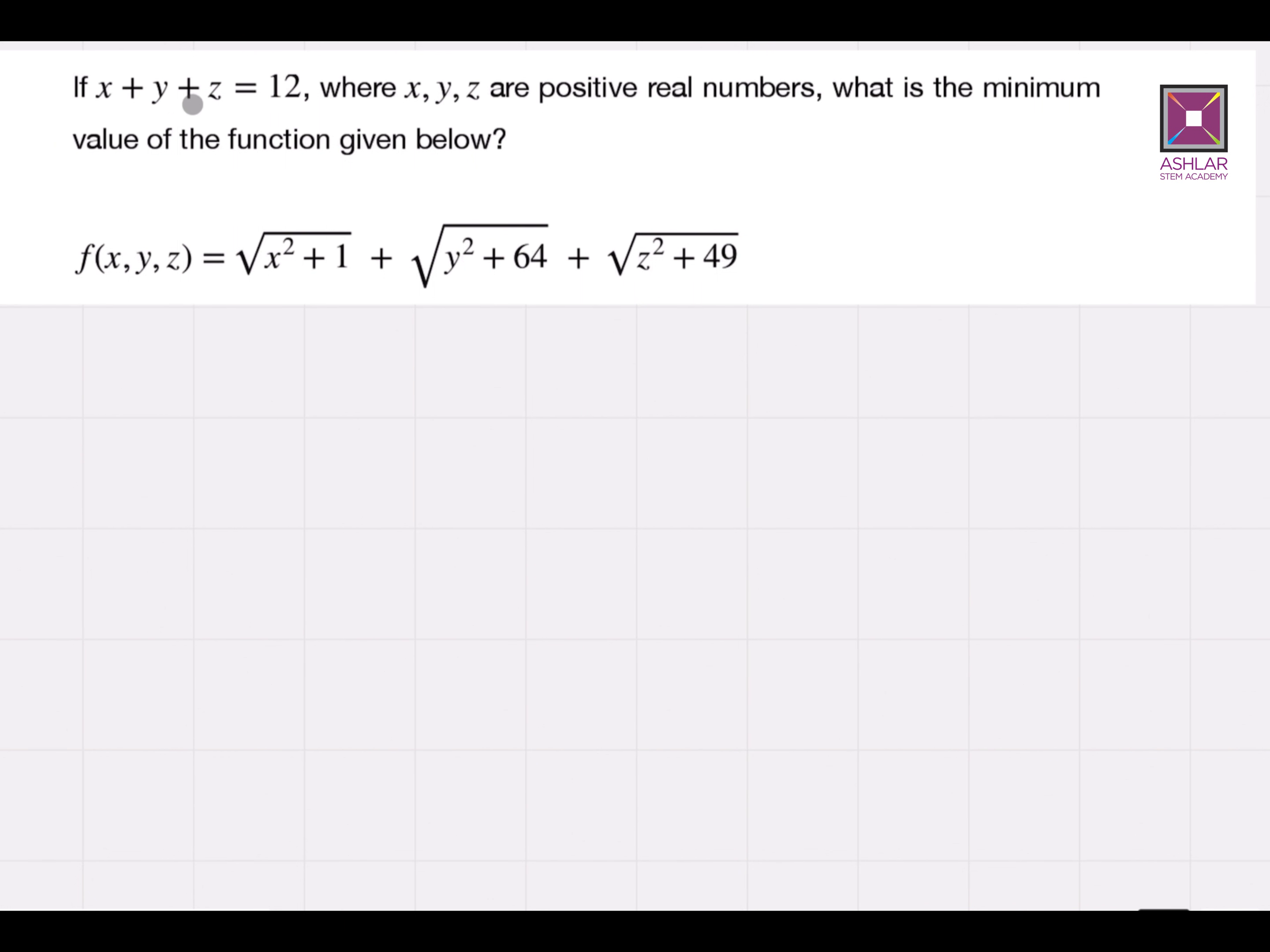If x plus y plus z is equal to 12, where x, y, z are positive real numbers, what's the minimum value of the function given below? So f as a function of x, y, z is equal to square root of x squared plus 1 plus square root of y squared plus 64 plus square root of z squared plus 49.